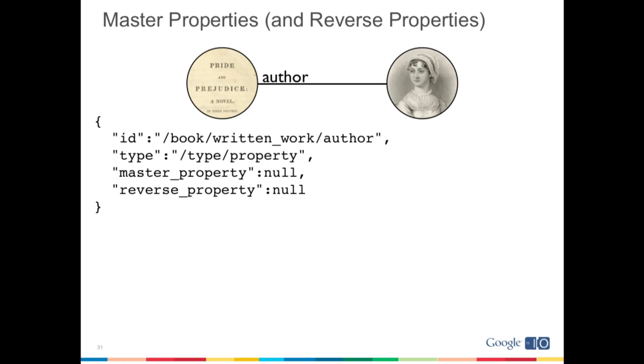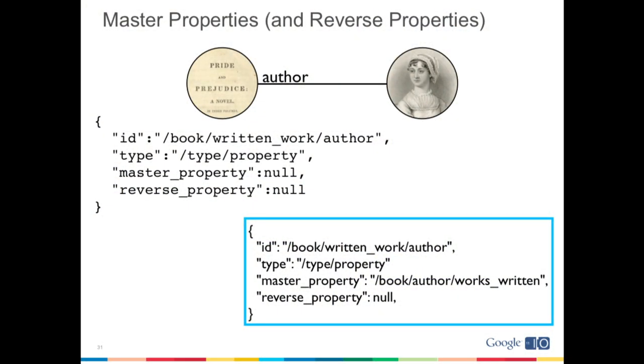Properties are bi-directional and have different names in each direction. For the most part you can think of properties as uniform, but under the surface properties actually have a directionality. Here I'm asking about the author property in the /written_work type — is it a master or is it actually the inverse of another property? Running this query, I discover there is a master property defined on author, which is works_written — the link running in the other direction. The only thing to take away is that there is this notion of directionality buried under the covers, and when we start playing some of the games we'll discuss, this will come in very handy.